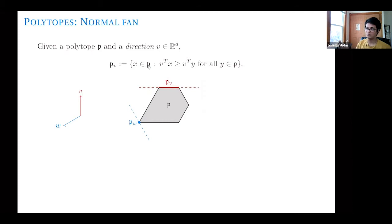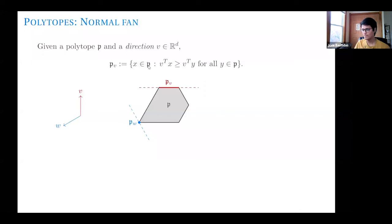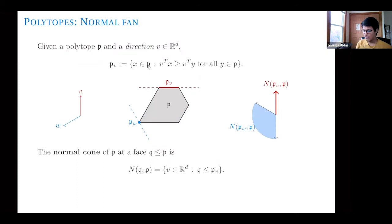Faces of a polytope are precisely the sets we can obtain in this manner. With a different vector W, doing the same process — taking the last non-empty intersection — I can obtain a point, which is a vertex of P. We define the normal cone of a face Q of the polytope P as the collection of all directions D such that P sub D equals Q. Basically, all vectors in the interior of the blue cone form the normal cone of this face. If I take any vector in the interior of this cone and maximize in that direction, the result will be this point.